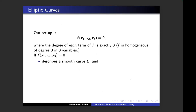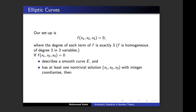The first condition is geometric: look at whether this homogeneous polynomial equation describes a smooth curve. This is easy to check — find all partial derivatives with respect to each variable and make sure they don't vanish simultaneously. The second condition is that there is at least one trivial solution with integer coordinates to start with. If these two conditions are satisfied, geometrically we call that an elliptic curve. For the rest of this talk, I'll be discussing these elliptic curves — polynomial equations in three variables of degree three satisfying these two mild conditions.